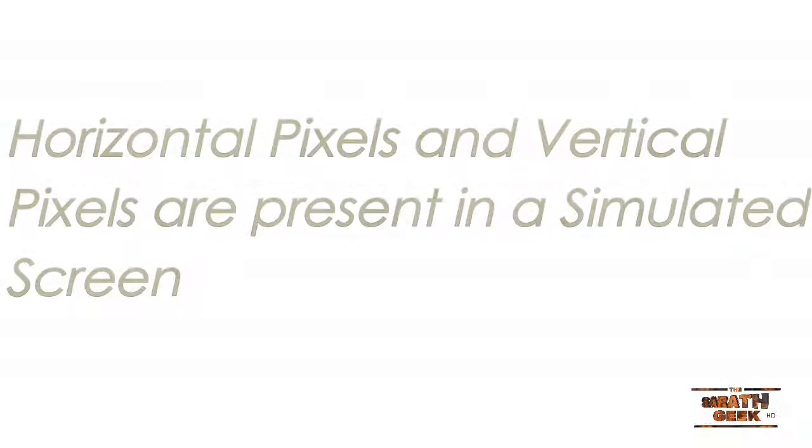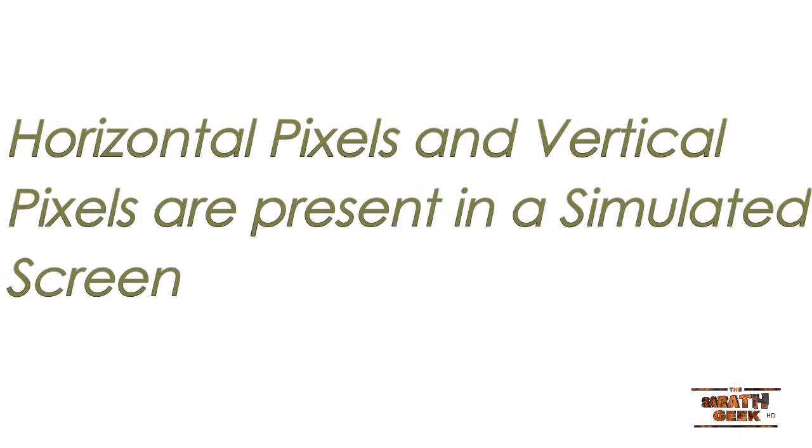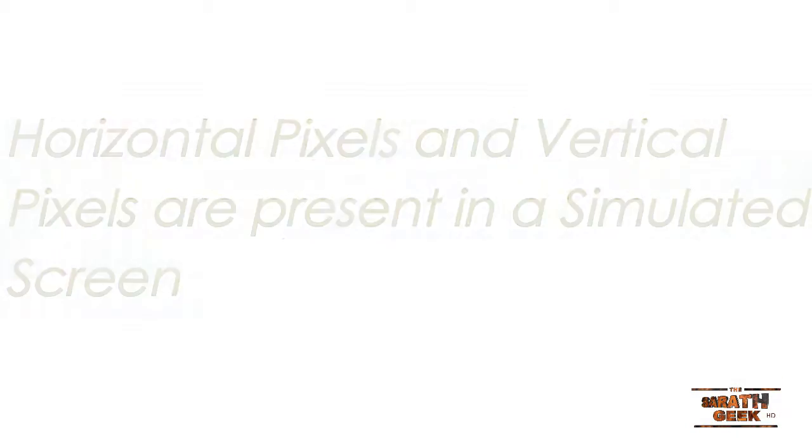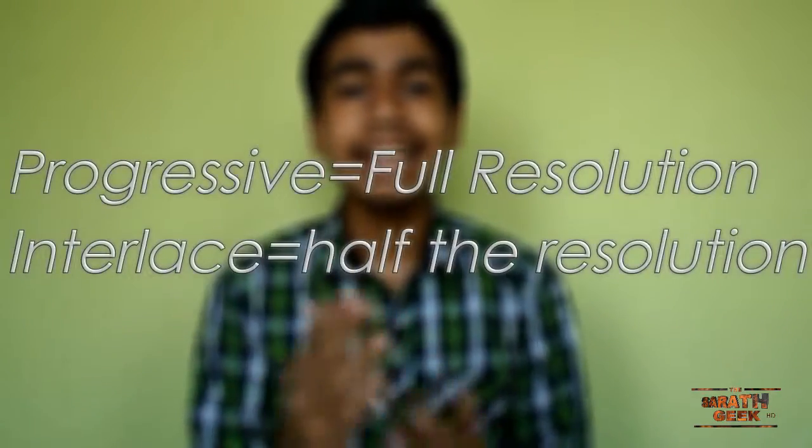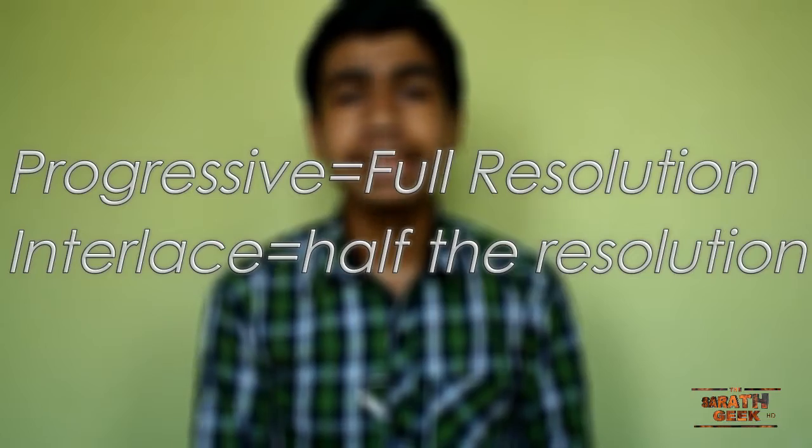In a TV, if you look, there are horizontal pixels and vertical pixels. In progressive (P), you have the full pixels, whereas in interlaced (I), it has half the pixels. So 1080i and 720p are similar in typical practical usage. I think that clears up that myth.